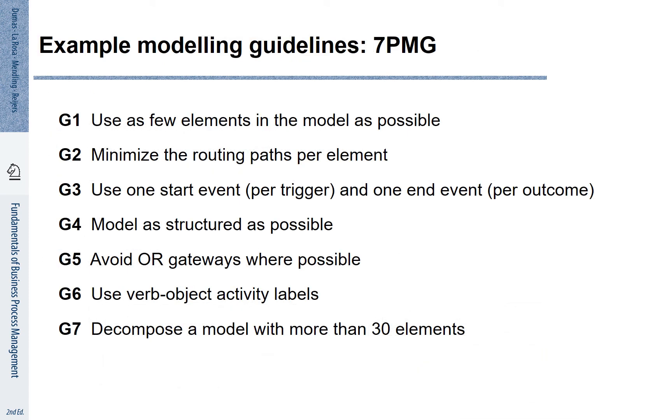Various guidelines have been formulated to help making models nice. One set of guidelines are the seven process modeling guidelines. Guideline one says we should use as few elements as possible in the model. In this way, we can make sure that the model is compact and easy to understand. We should also try to minimize the routing paths per element. In this way, the model is also nicer and easier to read.